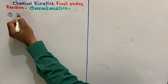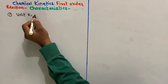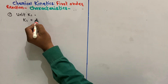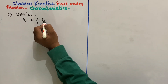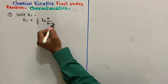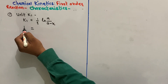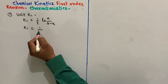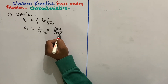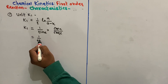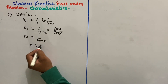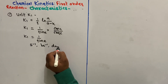Characteristic number 1 — the unit of rate constant k1. We have the equation k1 equals (1/t) into log of [A / (A minus x)]. Here, A is concentration and A minus x is concentration, and t is time. For units, k1 equals (1/time) into (concentration / concentration). Concentration gets cancelled, so the unit of k1 is per unit time — for example, per second, per hour, per day, and so on.